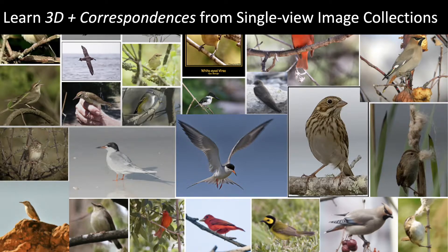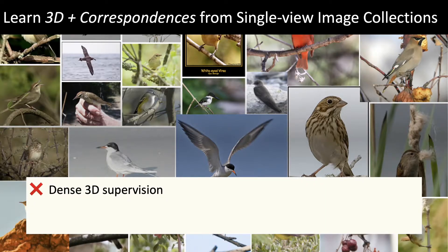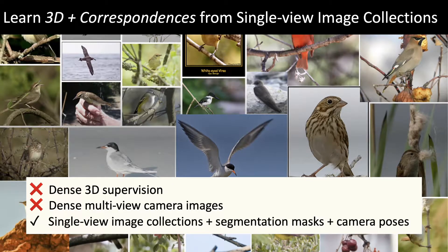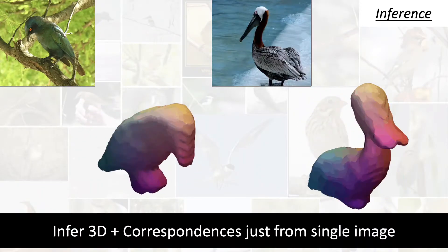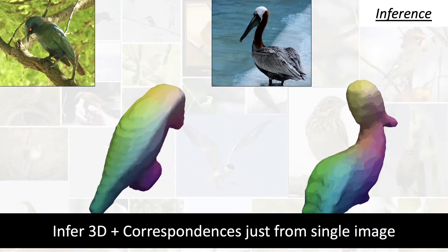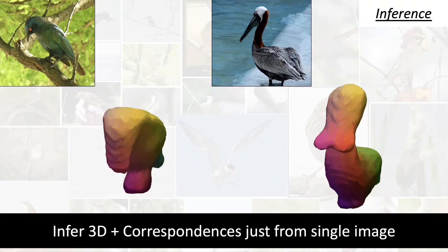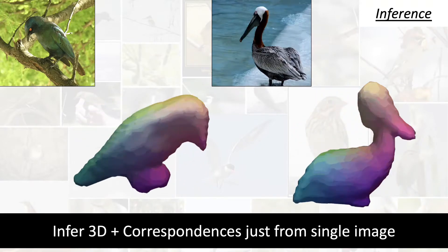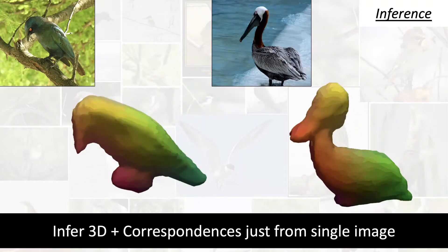At training time, our system doesn't require any form of dense supervision, be it dense 3D supervision or dense multi-view camera images. It learns only from unpaired single-view image collections, corresponding segmentation masks, and camera poses. Once learned, our system can then reconstruct 3D geometry and model dense correspondences just from a single image at test time.